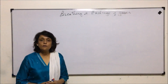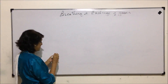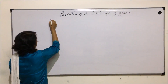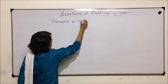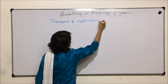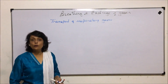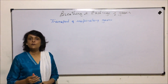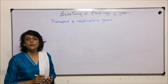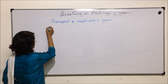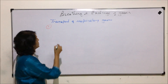In this section, we'll talk about transport of respiratory gases. We have seen the exchange at both levels, that is at lung level as well as at tissue level. Now, how these respiratory gases actually get transported through blood is what we want to discuss here. In the first segment, we'll talk about transport of oxygen.